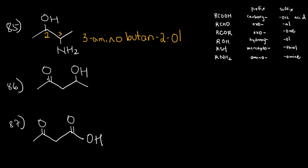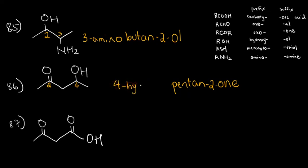For example 86, we follow the same principle — identify the two functional groups and compare their ranks. We have a ketone (R-CO-R) and an alcohol (OH). Between an alcohol and a ketone, ketones are of higher rank, so we use the suffix -one. The parent chain has five carbons with no double bond, so that's pentanone. We start numbering to give the ketone the lower number — carbon 2 — making the OH at carbon 4. The prefix for OH is hydroxy, so the name is 4-hydroxypentan-2-one.